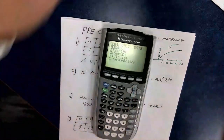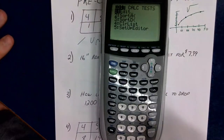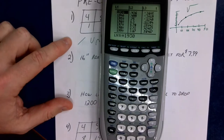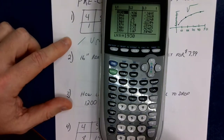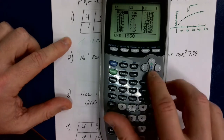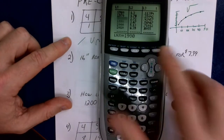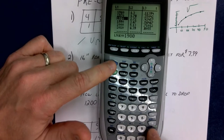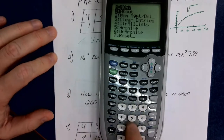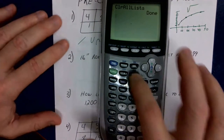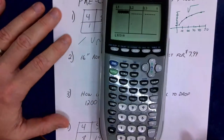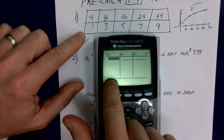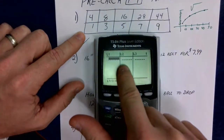The first thing I'm going to do is go to STAT, then EDIT. This has a lot of data in it — I'm going to reset it. Second and the plus sign, number 4 says clear all my lists. So I'll start fresh and clear. I'm going to put the x-values in L1 going straight down, and the y-values in L2 going straight down.